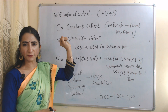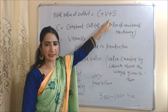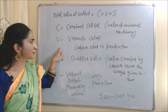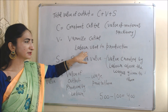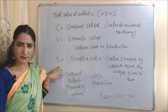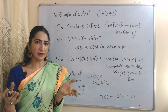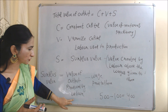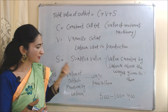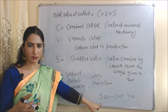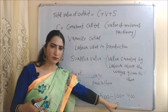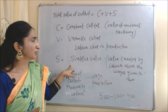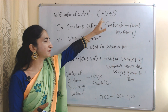According to this theory, total value of output equals c plus v plus s. Here, c is constant capital — meaning the value of material and machinery. V is variable capital — meaning labor used in production. S is surplus value — the value created by labor above the wages paid to them. The formula for calculating surplus value is: value of output produced by labor minus wages paid to them. For example, 500 minus 100 equals 400 surplus value.